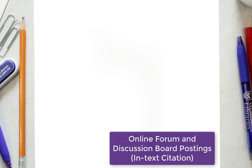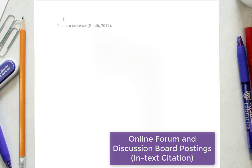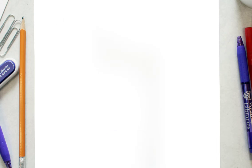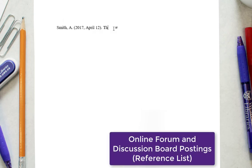Online forum and discussion board postings follow similar formatting to online PowerPoints or lecture notes. In-text citation follows the normal citation order: author's surname followed by the year of creation. Similarly, in the reference list, citations should list the author's name followed by the year. If the author's name is not available, provide the screen name. Place identifiers like post or message numbers, if available, in brackets.